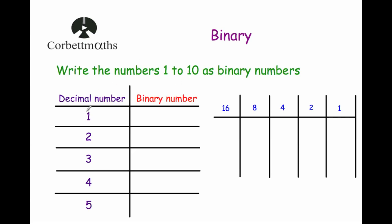Our first decimal number, 1 in binary: we just go to our units column and put a 1 in there, so the number 1 in binary is just 1. For the number 2 in binary, we can't put a 2 in the units because we can only use the digits 0 and 1. So we put a 1 in the 2s column and a 0 in the units. So 10 in binary is the number 2.